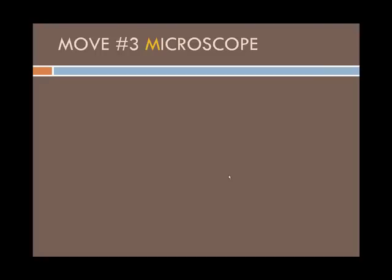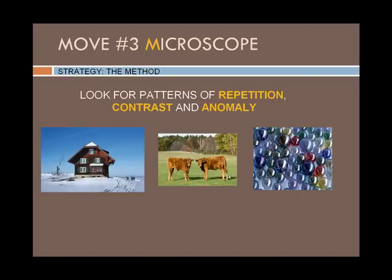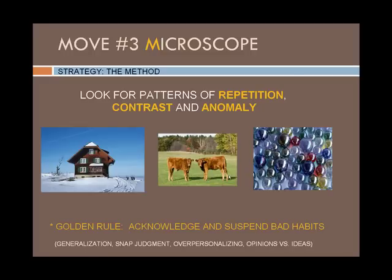In the previous installment, we looked closely at our subject as if through a microscope and practiced cataloguing what we saw, being careful to stay away from judgment or abstraction. We'll practice the same thing here with a strategy called the method, but this time we'll look for patterns of repetition, contrast, and anomaly. As always, keep in mind the golden rule of analysis: acknowledge and suspend your bad habits of mind, such as generalization, snap judgment, over-personalizing, and offering opinions versus ideas.